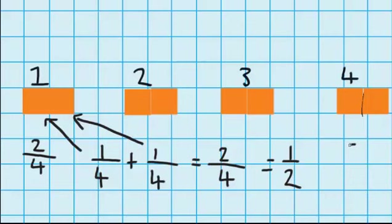And we could check that with a picture. Here is a circle cut into quarters. If I shade one quarter, then two quarters, you can see that it's the same as shading half of that circle.